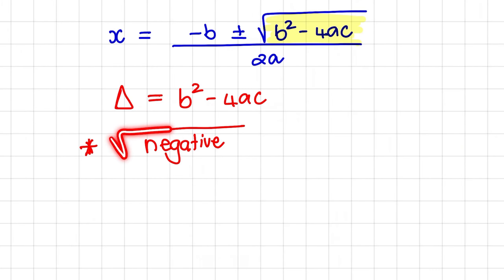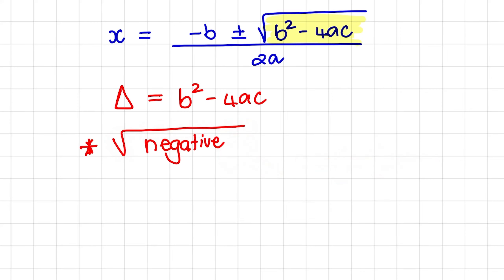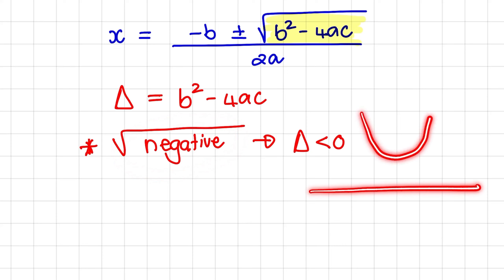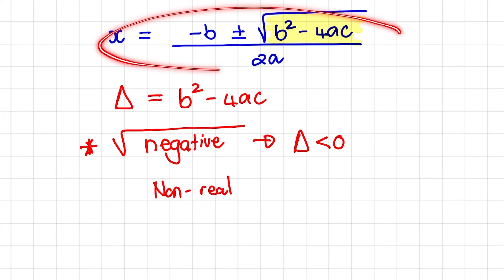We know that the square root cannot have a negative value on the inside and still exist on a number line. So the moment we have a negative value, we say that delta is smaller than zero. When delta is negative, no real value exists, so the roots do not exist on the x-axis. We say the roots are non-real, or there are no real solutions to this equation.